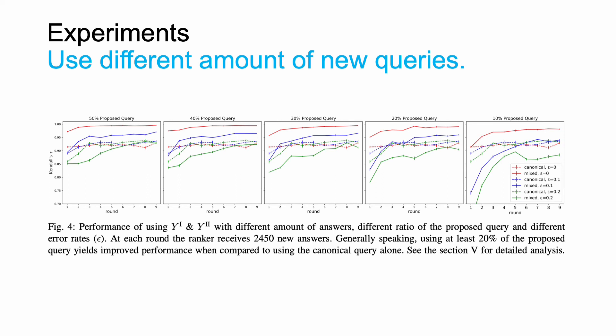Here are results on the synthetic datasets, which reveal insights for how the proposed query should be combined with the existing one. In these experiments, labels arrive in rounds, so we can observe how performance changes as labels accumulate. At each round the learner receives a batch of labels. In each figure, the x-axis is for the round index and the y-axis stands for Kendall's tau. These five figures differ in the ratio of new queries — the first figure illustrates results for spending 50% of the labeling budget on the new query, and the last one stands for using 10%. The colors of lines denote results for different error rates. Solid lines are results for using both queries, while dashed lines are results for using the canonical query only. As a general observation, it is beneficial to use at least 20% of the proposed query to achieve improved performance; performance becomes worse when using fewer queries when answers contain noise. You are welcome to check our paper for detailed analysis.